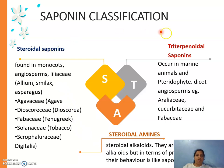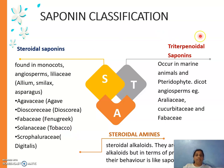Steroidal saponins and triterpenoidal saponins — another difference between them is that steroidal saponins are mainly present in monocot plants: agave, dioscorea, fenugreek, tobacco. Whereas triterpenoidal saponins are present in dicot plants; the best examples are licorice (jeshama) and shikakai (Acacia concinna).